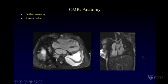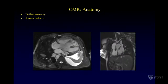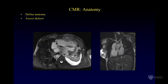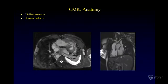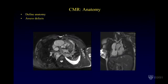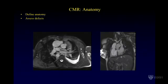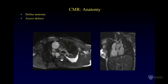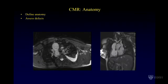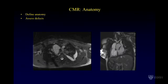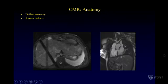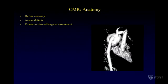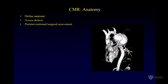With anatomy, MR is very good because it produces very high quality images. It has a wide field of view so we can see basically anything that we want. We are not limited by body habitus and the pictures can be taken in any plane. This is very good for definition of anatomy, particularly complex anatomy, to assess for defects, and also for pre-interventional or surgical assessment.